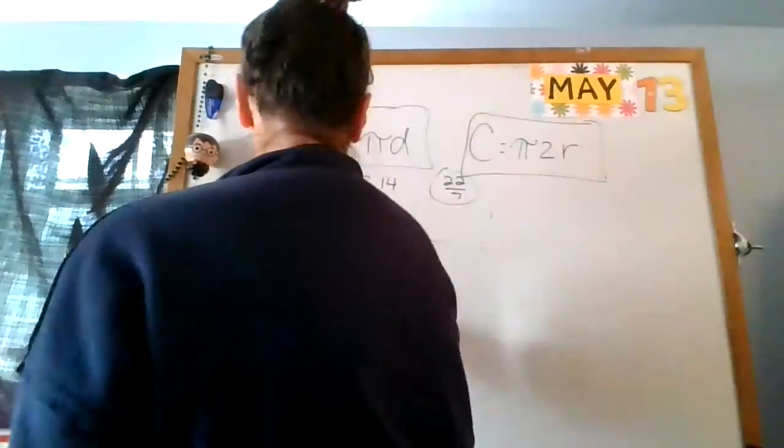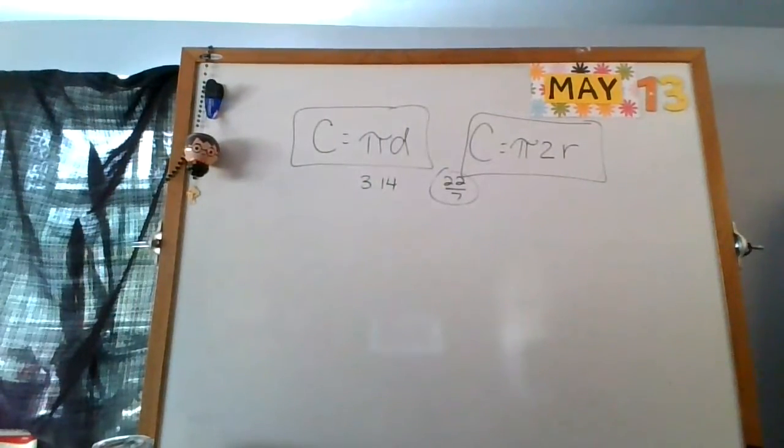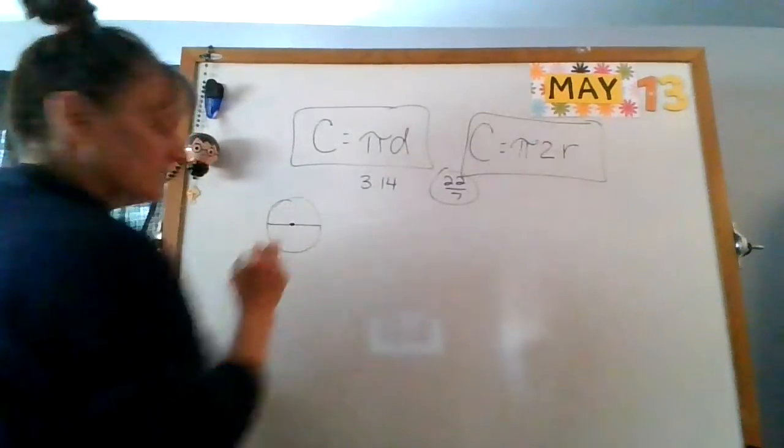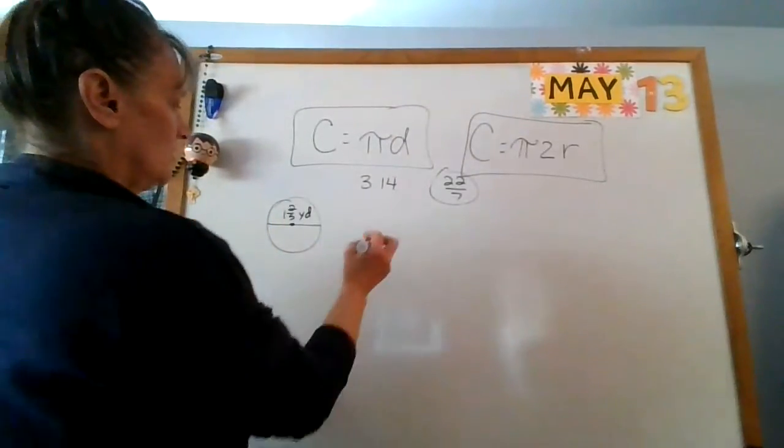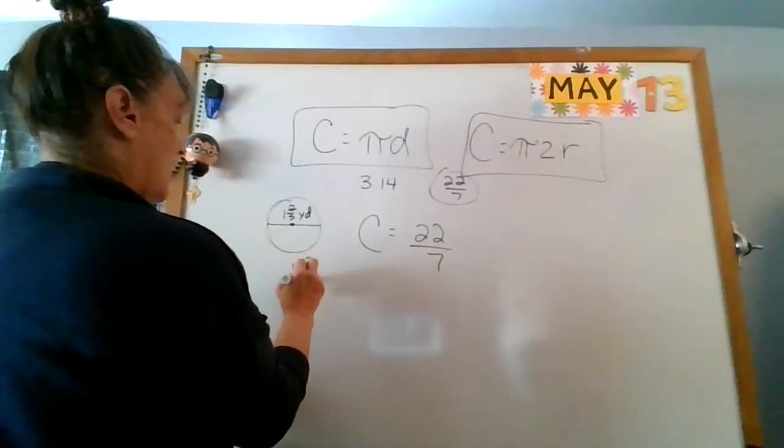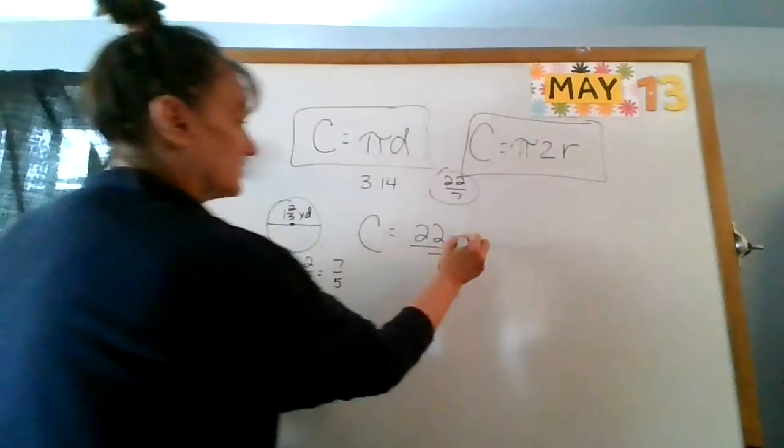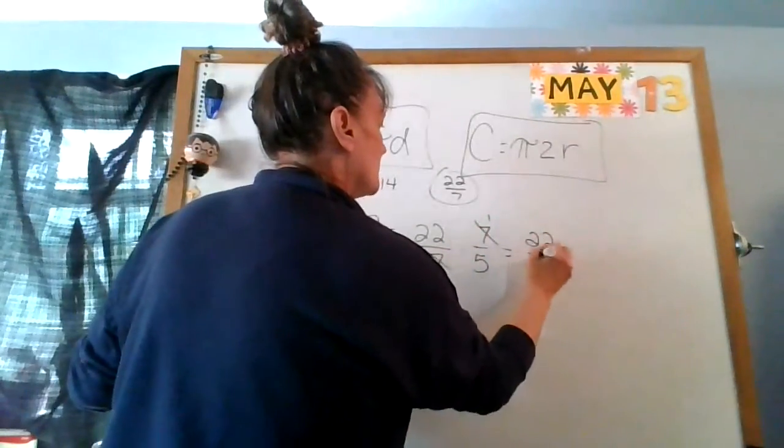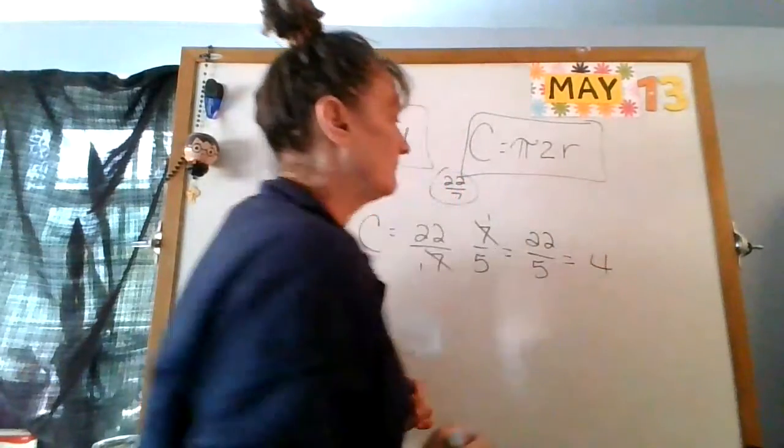The second four, they're going to give you, let's say they give me this time 1 and 2 fifths yards. I'm doing diameter, so I'm going to do pi d, so 22 sevenths times 1 and 2 fifths. I'm going to make that into an improper fraction: 1 times 5 is 5 plus 2 is 7, that's 7 fifths. 7 goes into 7 once. That gives me 22 fifths. Can I turn that into a mixed number? 5 goes into 22 four times, how many left over? 2.